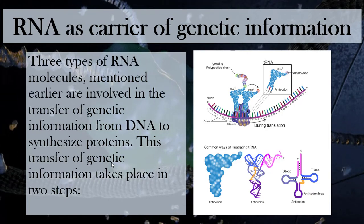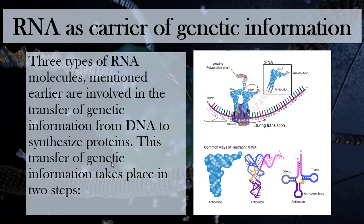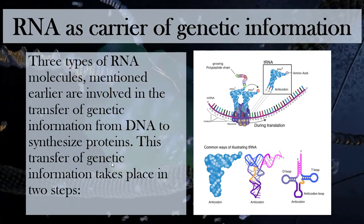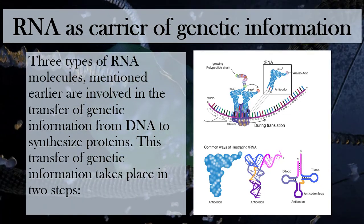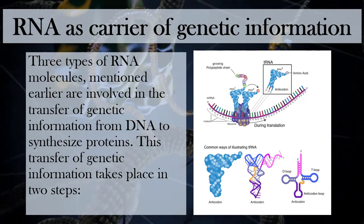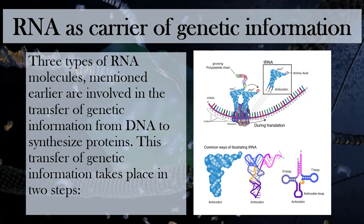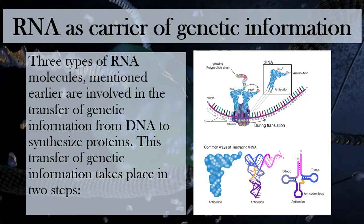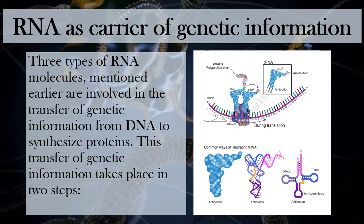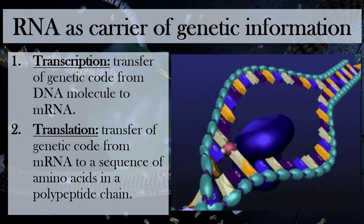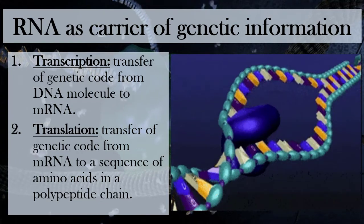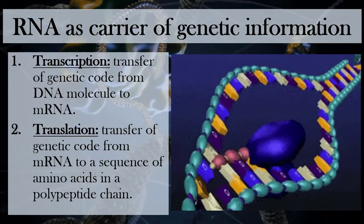Now let's see RNA's role as carrier of genetic information and how it carries that information. All three types of RNA molecules play a very important role in protein synthesis and are involved in the transfer of genetic information from DNA to synthesized proteins. This transfer takes place in two steps. The first step is transcription, where the genetic code — the specific sequence — is transferred from the DNA molecule to messenger RNA.